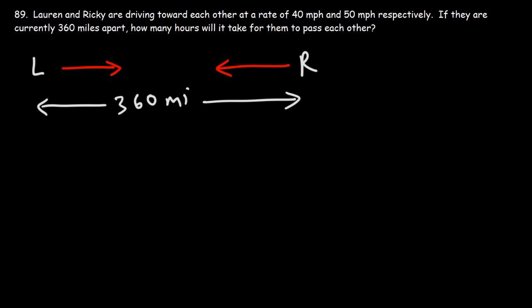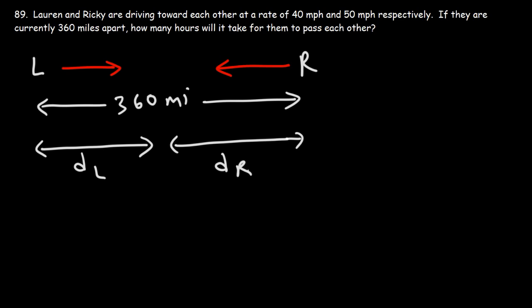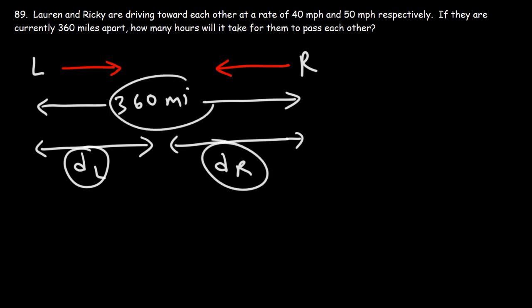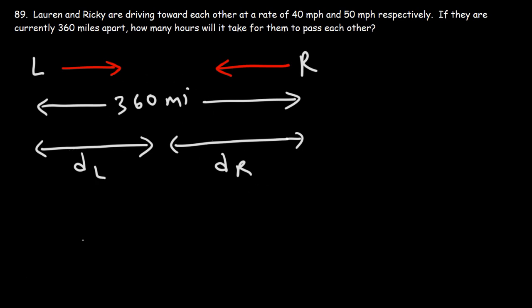What do you think we need to do? Let's say that DL is the distance that Lauren travels from where she is to the point where she meets up with Ricky. And DR is going to be the distance that Ricky travels. So their combined distance, DL plus DR, must add up to 360. So DL plus DR equals 360.